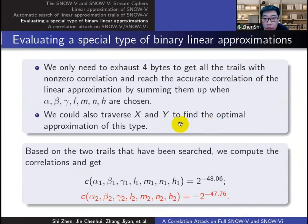Thus we only need to exhaust four bytes to get all the trails with nonzero correlations and reach the accurate correlation for fixed α, β, γ, l, m, n, and h. We can also traverse two bytes of α and β to find the absolute correlations as large as possible. Based on the two trails we have searched out, we calculated their correlations. The second one is the best result we got.